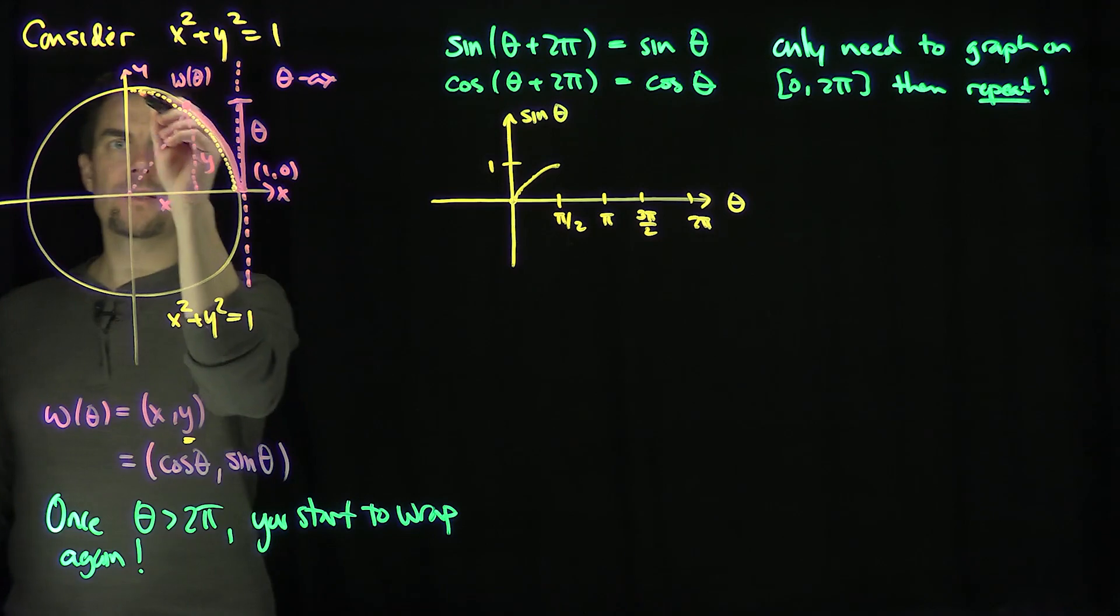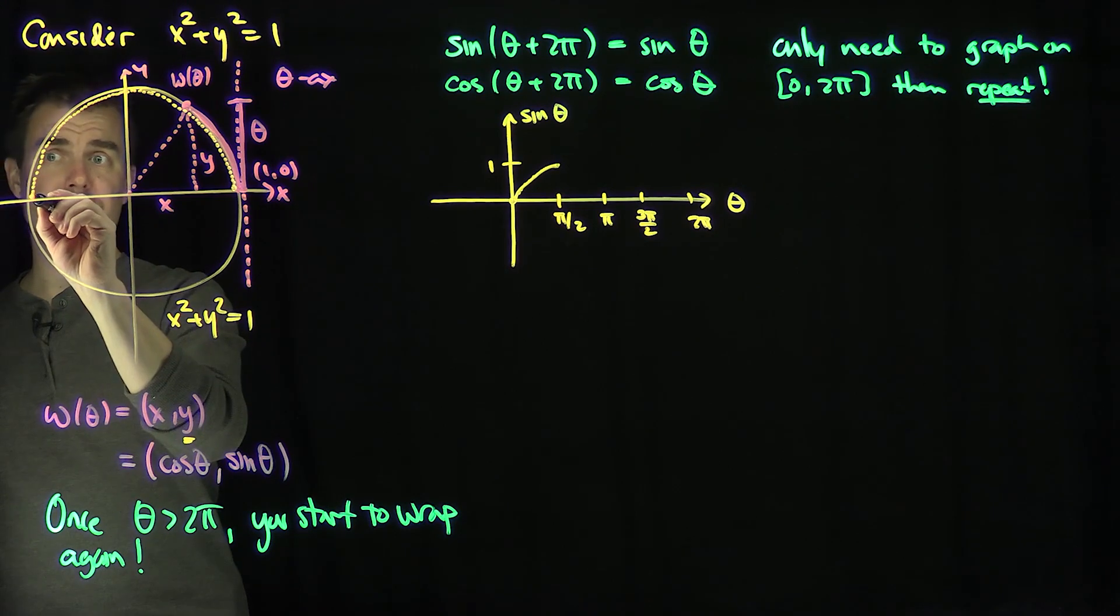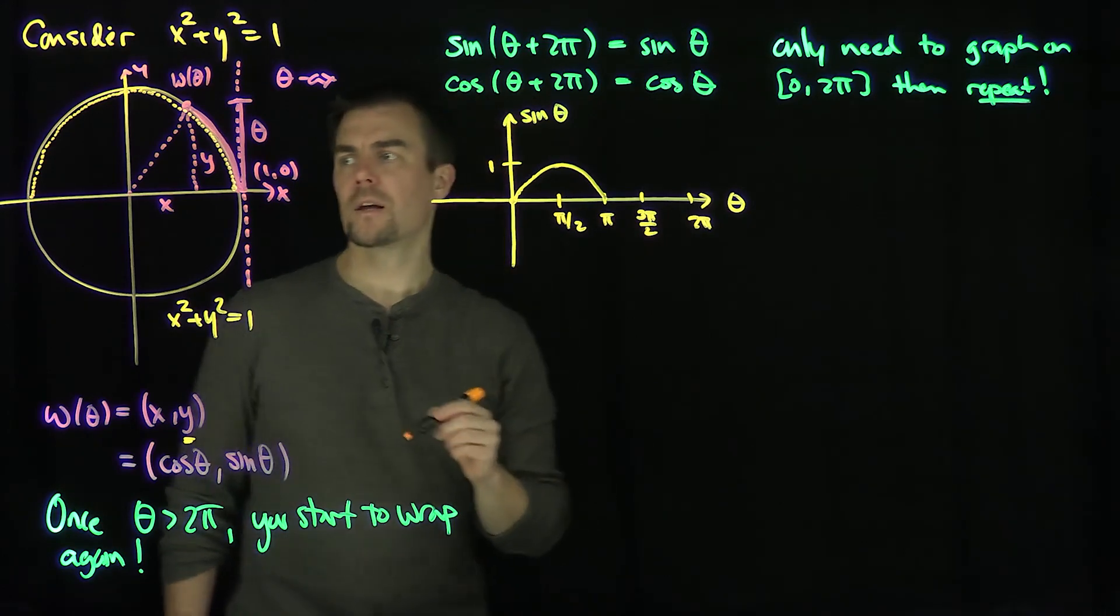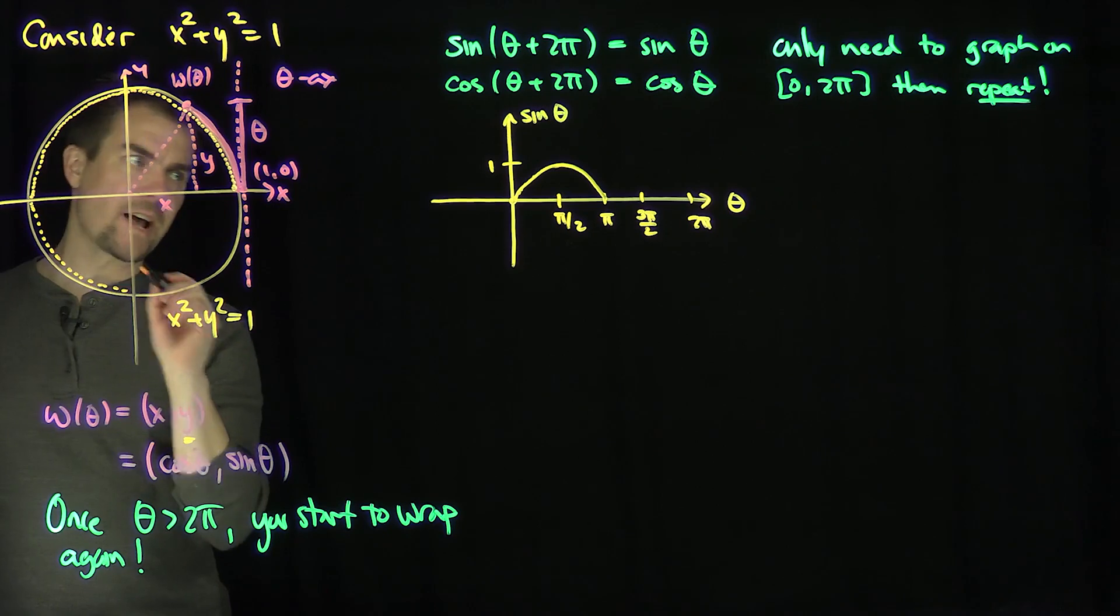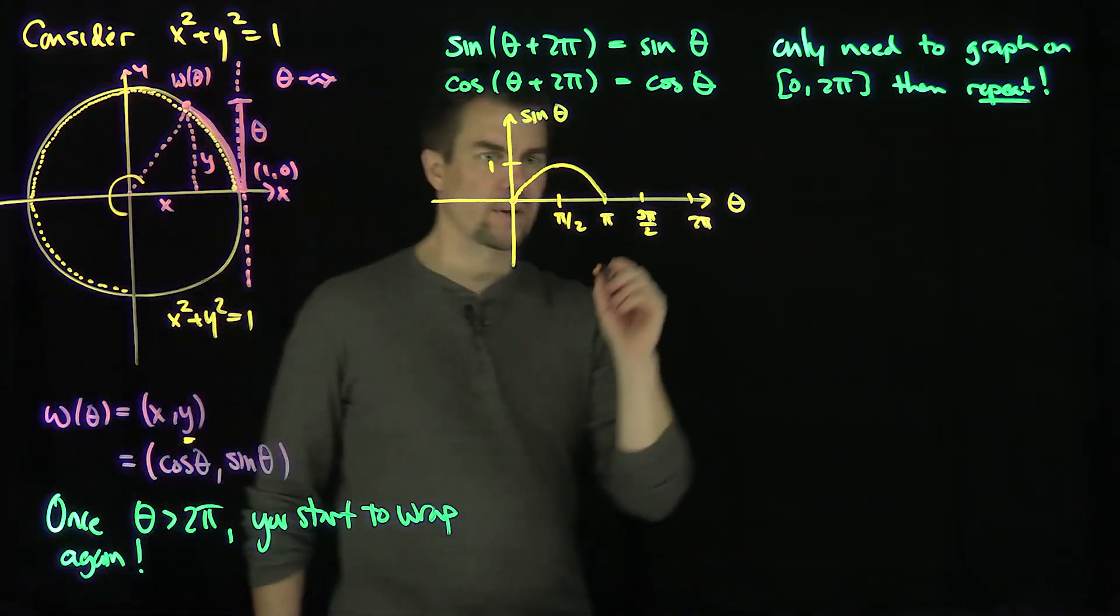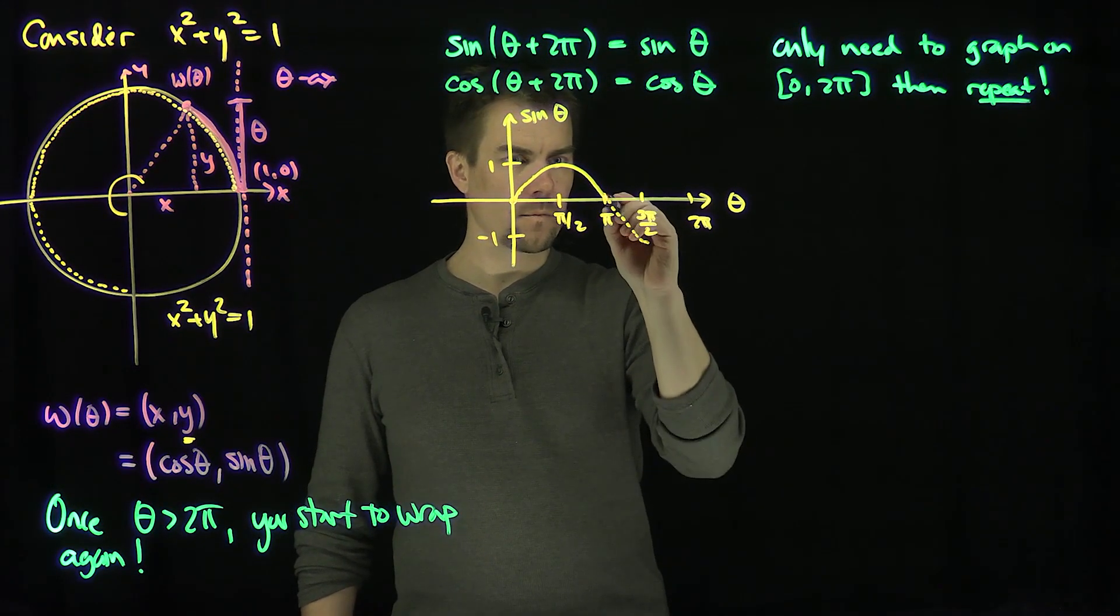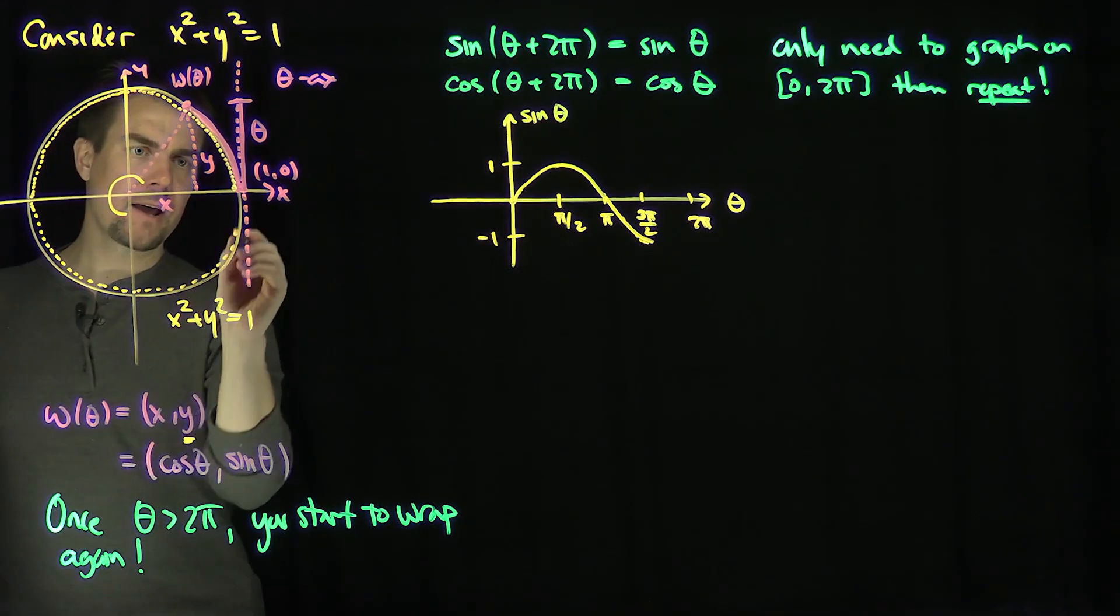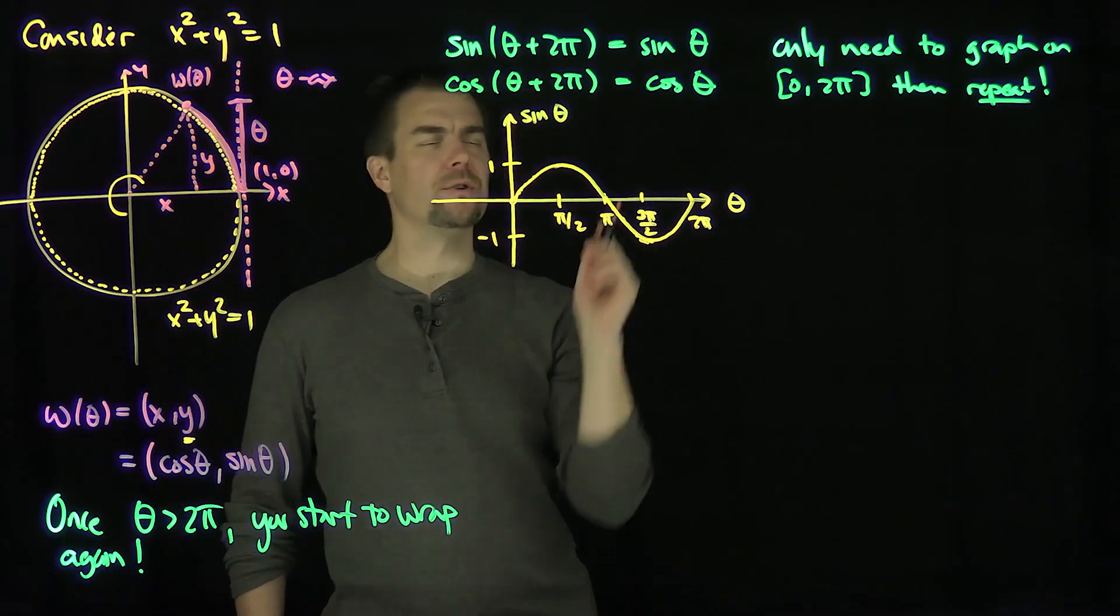And then what happens? Then the y value starts to go from 1 all the way down, and then the y goes all the way down. The y value at this point is 0. So when you hit the pi, the y value goes to 0. And then the y value becomes negative and goes all the way down to negative 1. So then go down to negative 1 at a total of 3 pi over 2. And then finally, when I go back up to 2 pi, it goes back up to the value of 0. There's no y value there. So we get this version of sine.